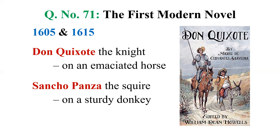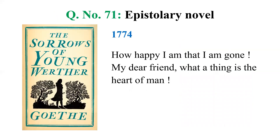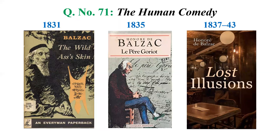Next we have the German writer Goethe — G-O-E-T-H-E, pronounced 'Goethe' in English — and his autobiographical work The Sorrows of Young Werther, W-E-R-T-H-E-R, published in 1774. It is an epistolary novel — a novel written in the form of letters. The opening lines are: 'How happy I am that I am gone, my dear friend, what a thing is the heart of man.'